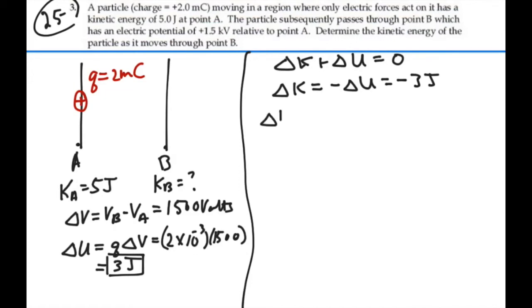The change in kinetic energy is our final kinetic energy, kinetic energy at B, minus our initial kinetic energy, the kinetic energy at A. And as we just determined, that should be equal to negative 3. Now we know our kinetic energy at A is 5, so we have that the kinetic energy at B, minus 5 joules, equals a negative 3.